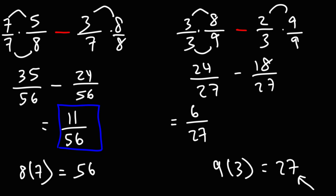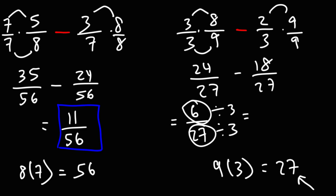27 is a common denominator, but the least common denominator would have been 9, because 3 and 9 both go into 9. Since we didn't use the least common denominator, we'll have to simplify this answer. We can simplify by dividing both numbers by 3, because both 6 and 27 are divisible by 3. 6 divided by 3 is 2, and 27 divided by 3 is 9, so the final answer is 2 over 9.